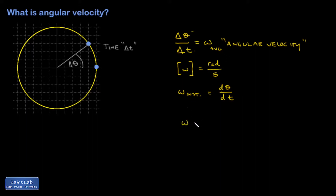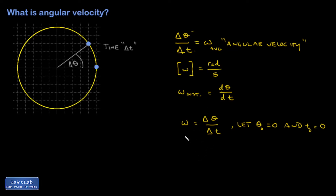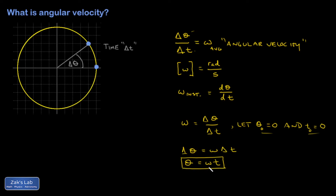So I can say that omega is delta theta over delta t. A useful thing to do is to let the initial angle be zero and the initial time be zero. There's no loss of generality when you do this — it doesn't matter what you call the starting angle. If I solve for delta theta and plug in these assumptions, I end up with this simple expression for the angle as a function of time: theta equals omega times t. This is really just a cousin of distance equals rate times time — it's just angle equals the rate the angle changes multiplied by how much time has gone by.